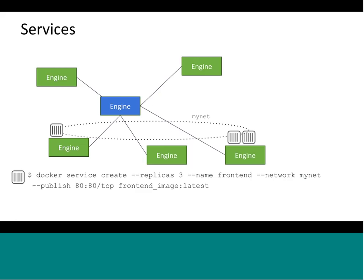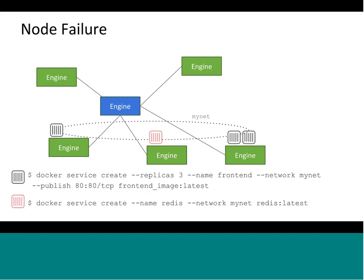You can start an additional service — in this case redis — on the same overlay network. Since I'm not specifying a number of replicas, by default it will just maintain one replica. Notice we didn't do anything to tell the scheduler where to place the containers; it looked for where resources were available. Now let's look at what happens when a node fails, because this is where the real power of services starts to come in.